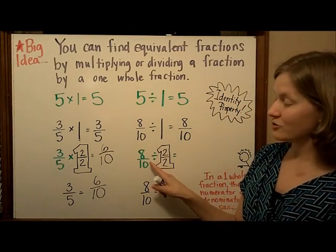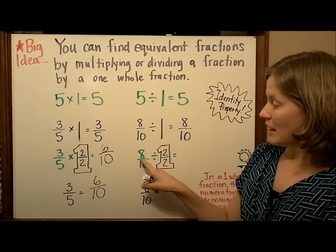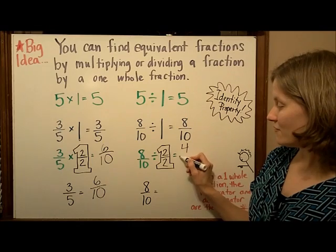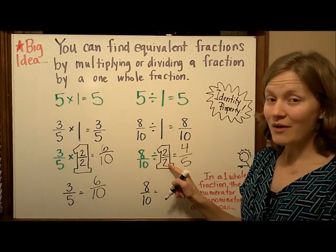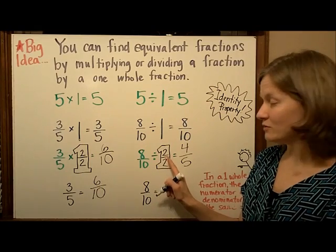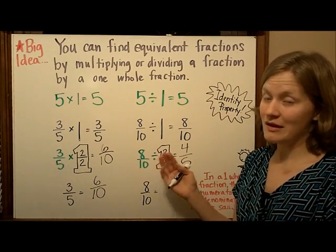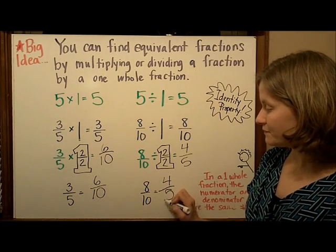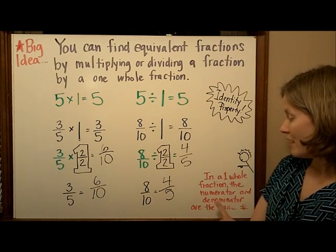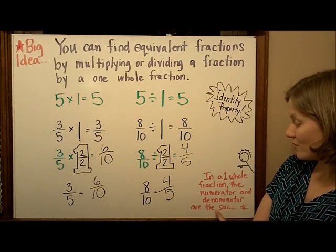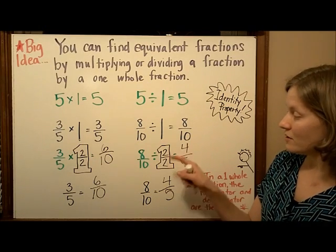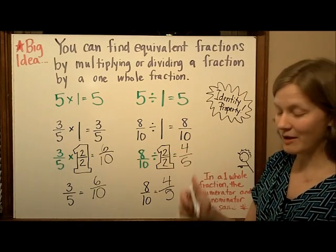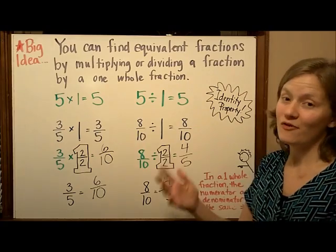Over here, I'm going to try dividing by a one-whole fraction. Eight divided by two is four; ten divided by two is five. And when I divide by one — two-halves is equal to one — I'm going to get a number that is worth the same amount. So eight-tenths is equal to four-fifths. It's important to remember that in a one-whole fraction, the numerator and the denominator are the same number. So whenever you're multiplying by a one-whole fraction, be sure that your numerator and denominator are the same amount — two-halves, three-thirds, or five-fifths.